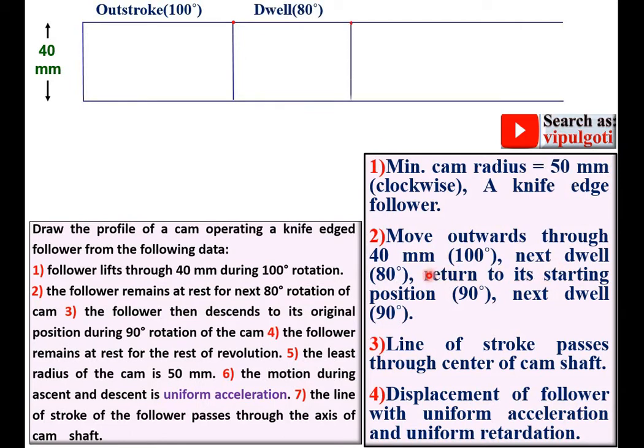Then next dwell is 80 degrees. So that the length of this stroke is equal to 8 cm. Then descent angle 90 degrees. So it is called as return stroke. And the length of this return stroke is equal to 9 cm.